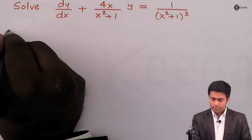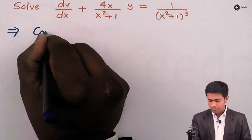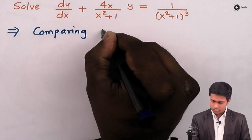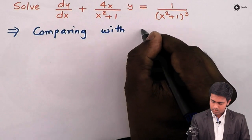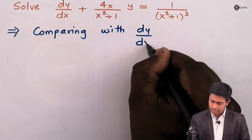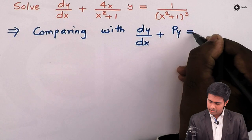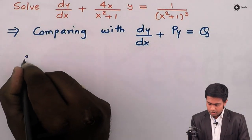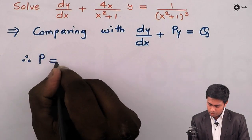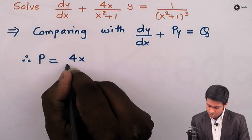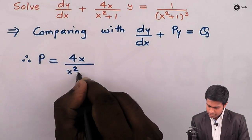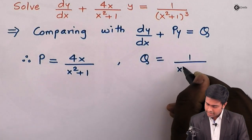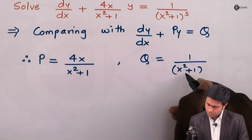Comparing with dy/dx + Py = Q, therefore the value of P equals 4x upon (x² + 1), and the value of Q is 1 upon (x² + 1)³.